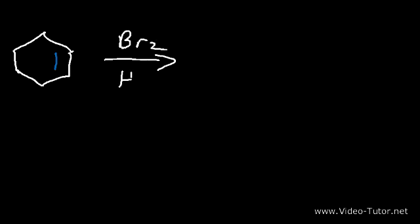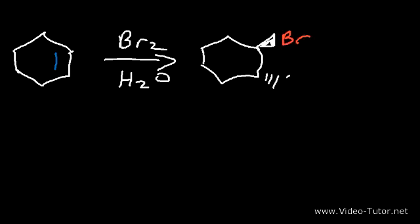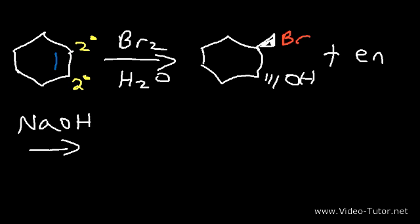The peroxy acid pathway is not the only way to convert an alkene into an epoxide. We can also use the halohydrin reaction. Starting with cyclohexene, if we add bromine in water, this gives us the halohydrin product — it's an anti-addition reaction. Typically the OH group goes to the more substituted carbon, but since both carbons here are equivalent, the placement doesn't matter. Once you add sodium hydroxide to the halohydrin product, it converts into the epoxide.